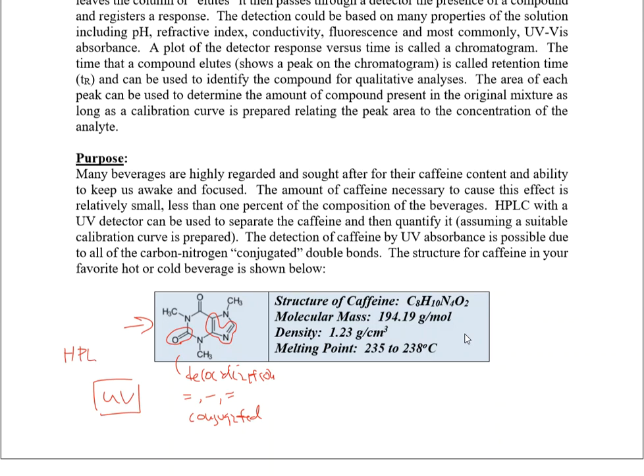We're going to pair the HPLC instrument with the UV-Vis detector. We have different HPLC instruments in our laboratory — one connected to a refractive index detector, which is not really suitable here. The problem is that refractive index requires super high concentrations for the detector to distinguish caffeine, and we're talking about milligrams. UV does a very good job for caffeine, so that's the detector we'll use.